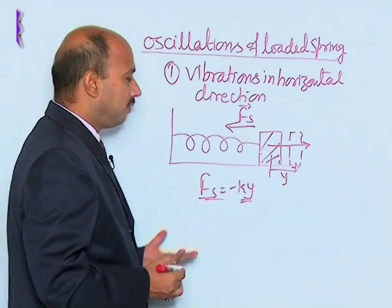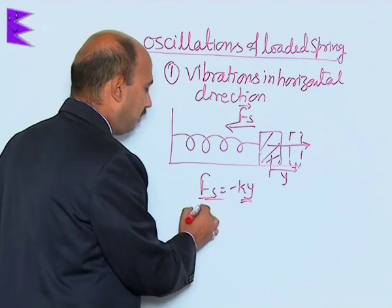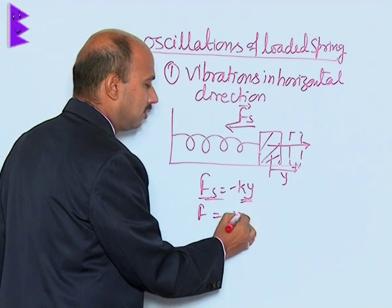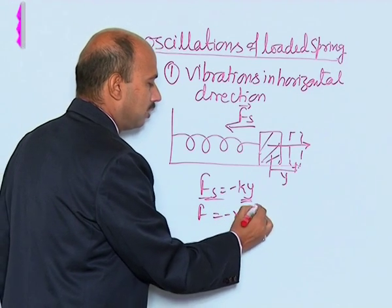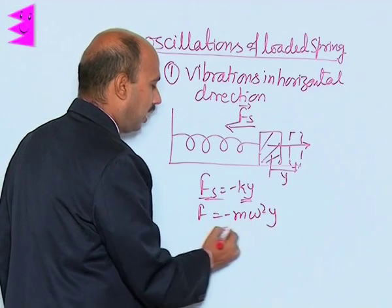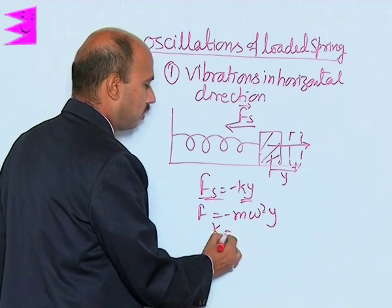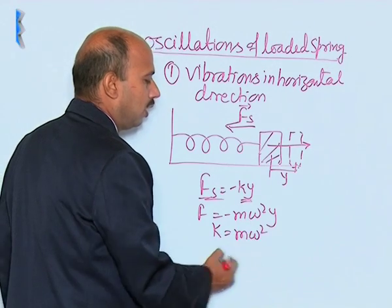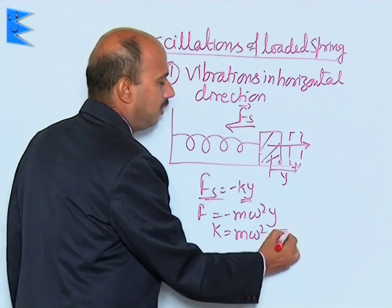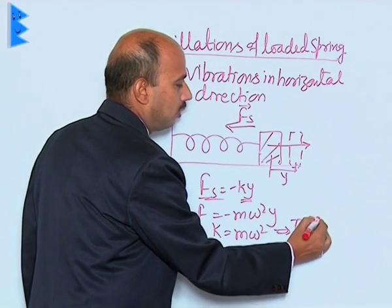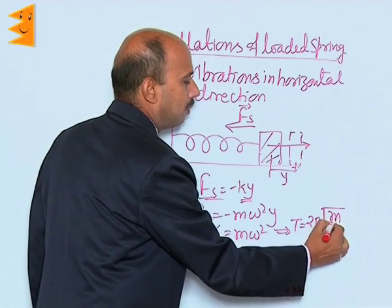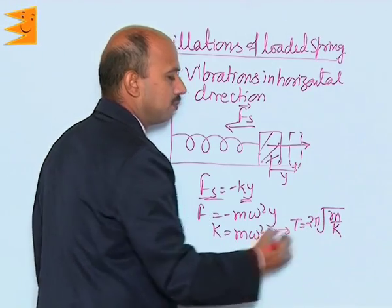So, we can write the formula for the time period, or we can equate it to minus m omega squared y, giving k equal to m omega squared. When you solve it, you will be getting time period T equal to 2 pi under root of m upon k.